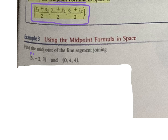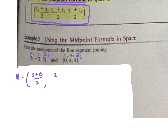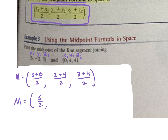I like to label my points before putting them into the formula: x1, y1, z1, and x2, y2, z2. So the midpoint would be x1 plus x2 — that's 5 plus 0 over 2 — then y1 plus y2 — negative 2 plus 4 over 2 — and z1 plus z2 — which would be 3 plus 4 over 2. So we get 5 halves, 1, and 7 halves. That's our midpoint.